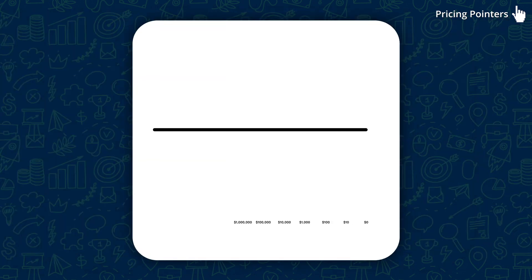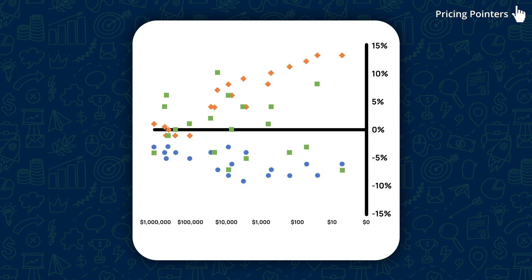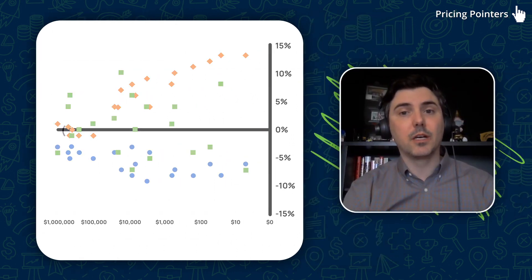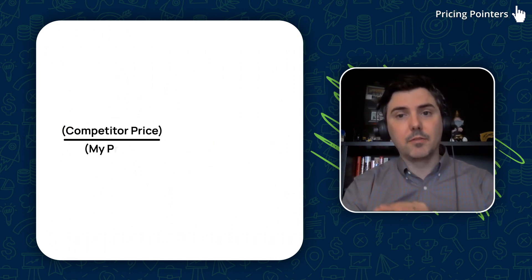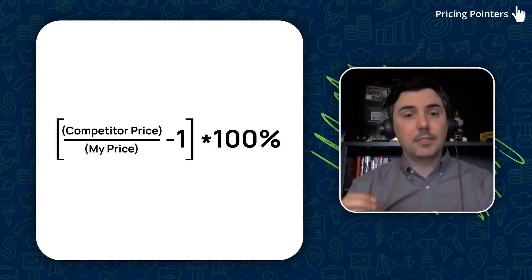It's a competitor and SKU combination. The x-axis represents your sales — this shows how important a SKU is to you. The y-axis is the price delta between your price and the price of your competitors for an equivalent SKU. We use the equation: (competitor's price / your price - 1) × 100.